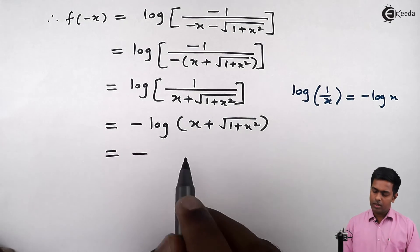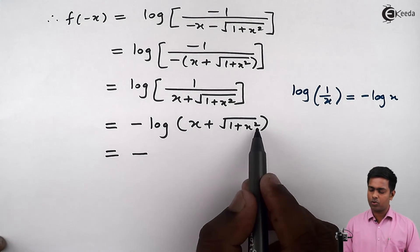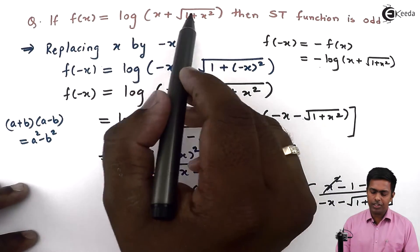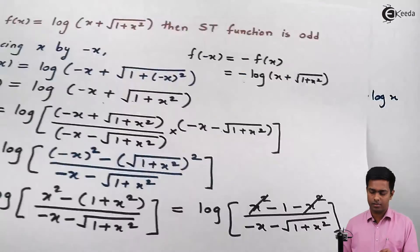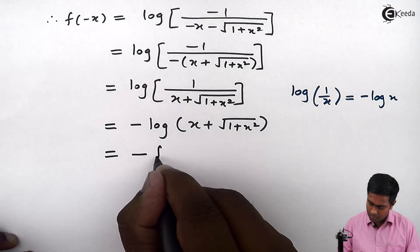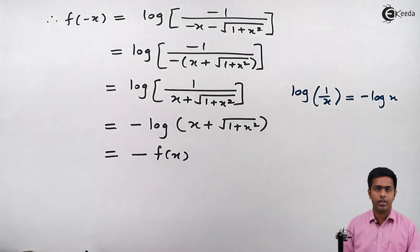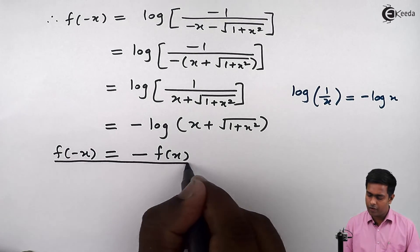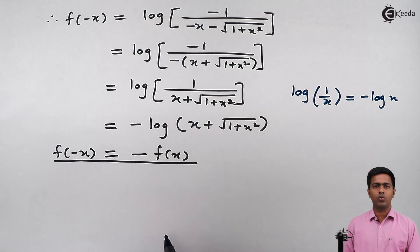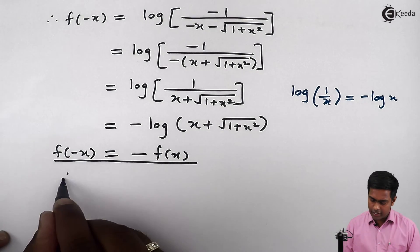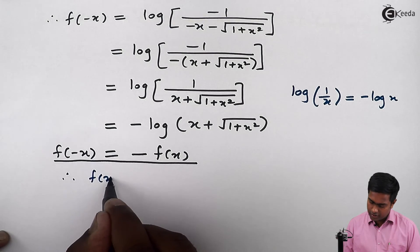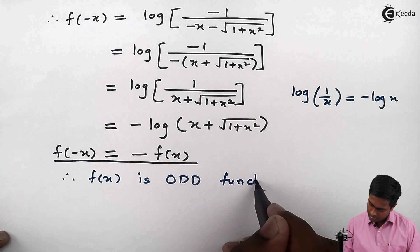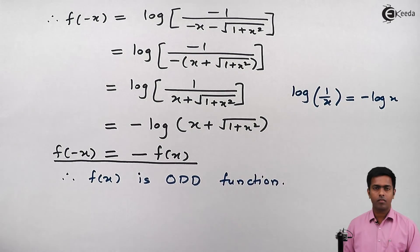If you observe, the term log of x plus root of 1 plus x square is exactly our f of x from the question. So replacing it, we get f of minus x equal to minus f of x. Hence we can say that f of x is an odd function. Thank you.